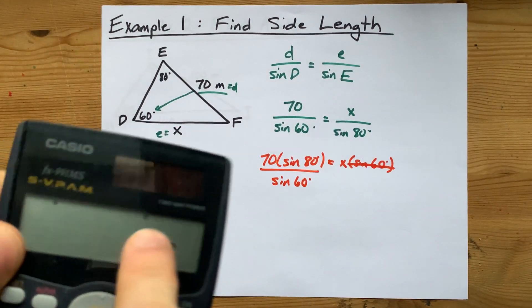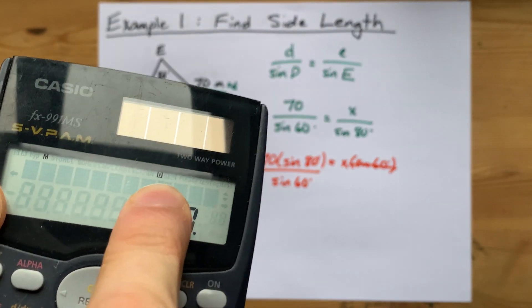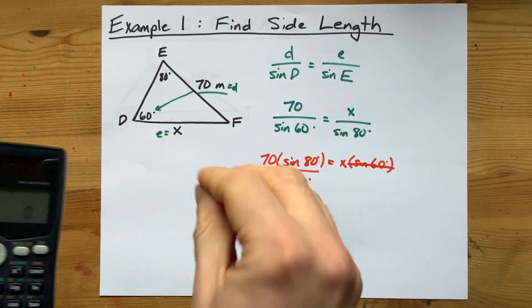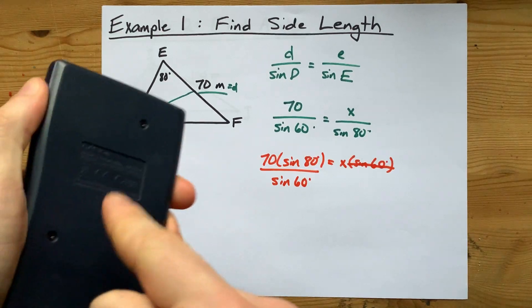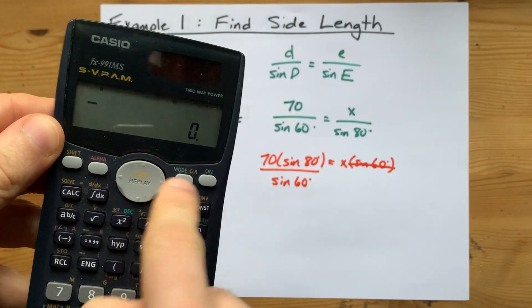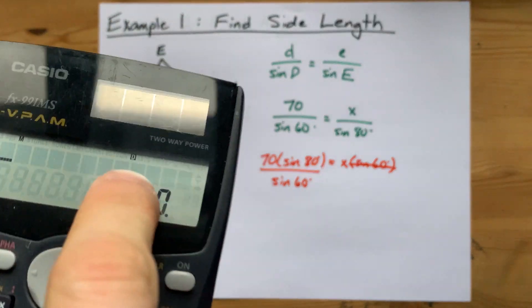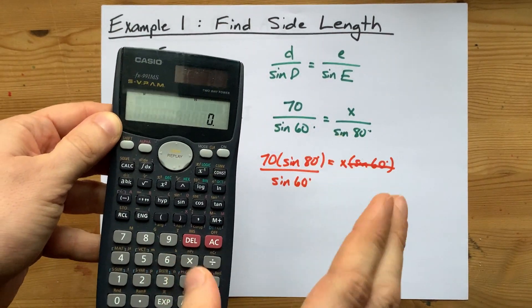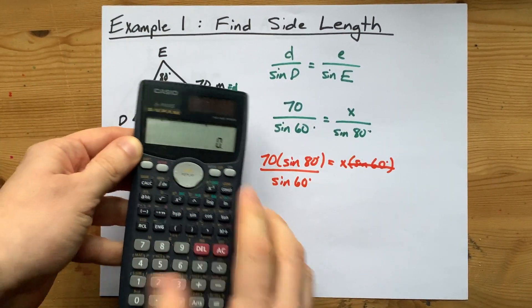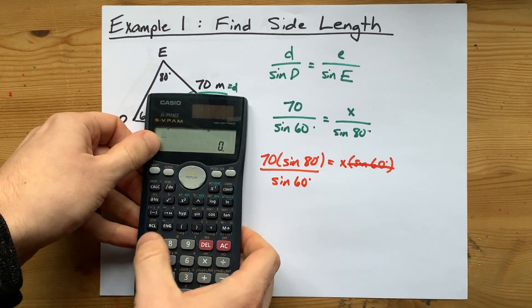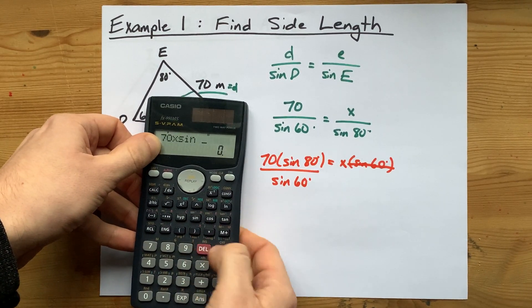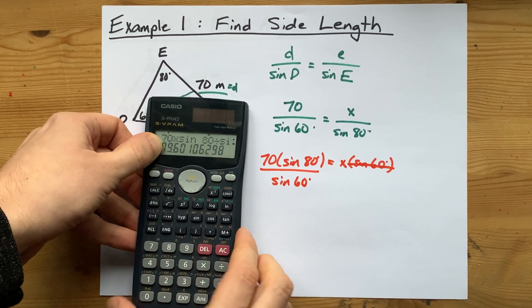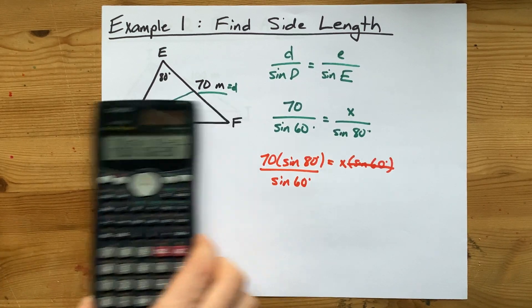Now to do this on your calculator, you just have to make sure you're in degree mode. On this calculator I have a D. Some just say deg. If it's not in that mode, you're going to have to press the reset button on the back of the calculator or change the mode so that it says deg or degrees. If you're in radian or gradient mode, you're going to get the wrong answer when you use sin. Okay, so what I'm going to do here is 70 times sin 80 and then I'm going to divide by sin 60. I get an answer of 79.6.